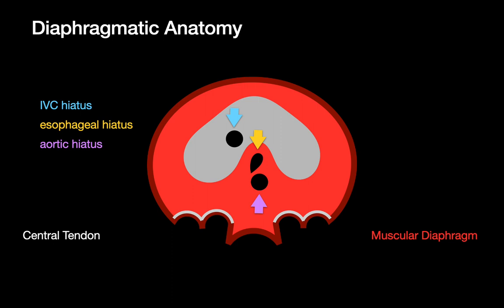There are three holes within the diaphragm: the hiatus of the IVC, the esophageal hiatus, and the aortic hiatus. There are also two arcuate ligaments along the posterior diaphragm on each side: the median arcuate ligament astriding the anterior psoas muscle, and the lateral arcuate ligament astriding the quadratus lumborum muscle.